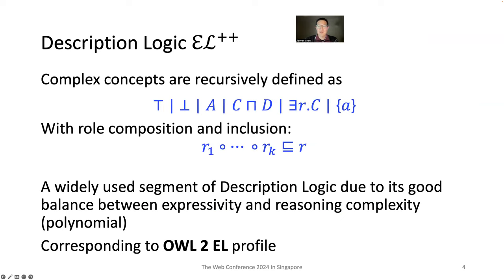EL++ is a fragment of Description Logic. It allows complex concepts to be recursively defined by concept conjunction, existential quantification, and nominals, together with atomic concepts and top and bottom concepts. It also allows role composition and inclusion. It is widely used because it keeps a good balance between expressivity and reasoning complexity.